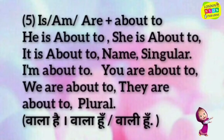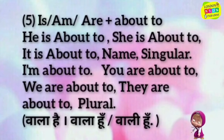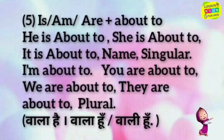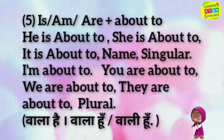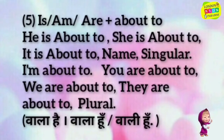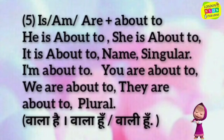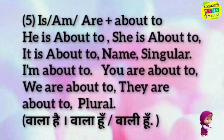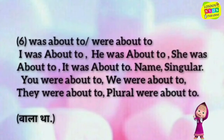He is about to, she is about to, it is about to, name (singular). I'm about to, you are about to, we are about to, they are about to (plural) — wala hai, wala hoon, wali hoon.